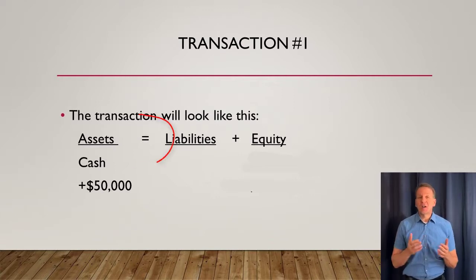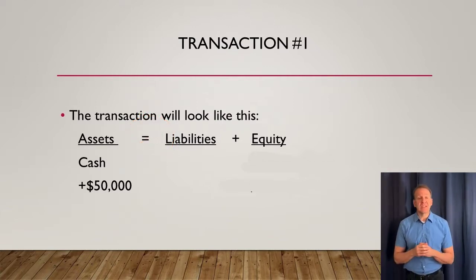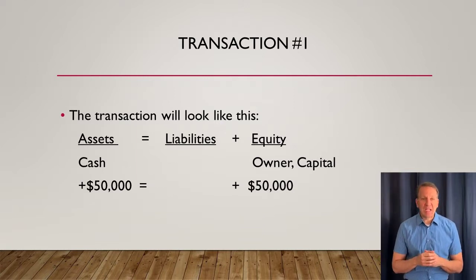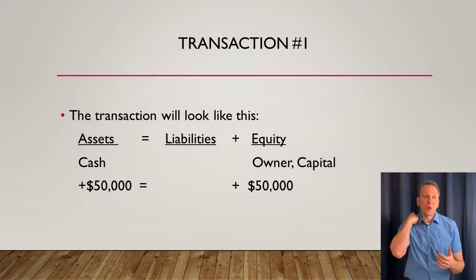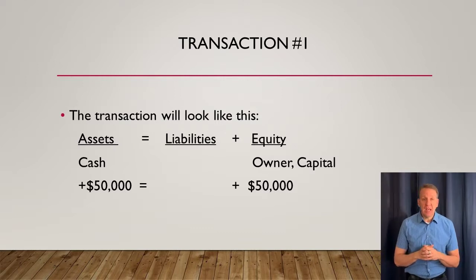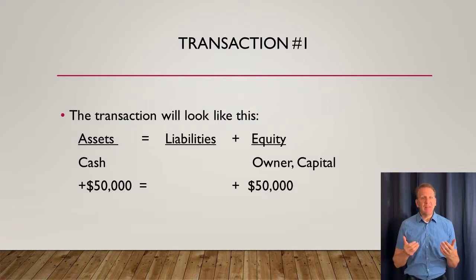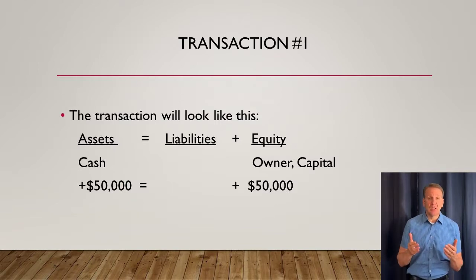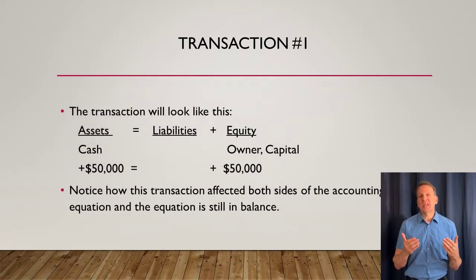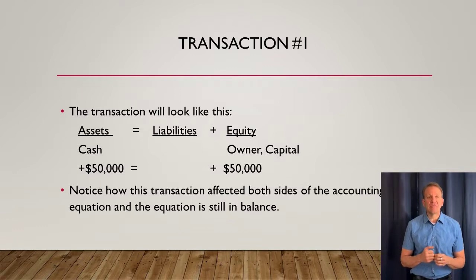Our equation is not yet in balance, so we need something on the right side of the equation for this transaction. Under equity, the owner's capital account has been affected. The owner now has $50,000 in ownership in this company, so the owner's capital account will go up by $50,000. We can see that the accounting equation is in balance — $50,000 on the left side equals $50,000 on the right side. With every transaction, we've got at least two things affecting our accounting equation.